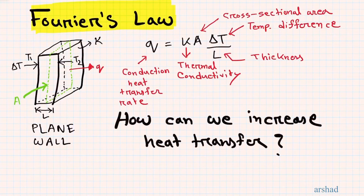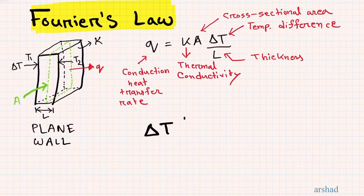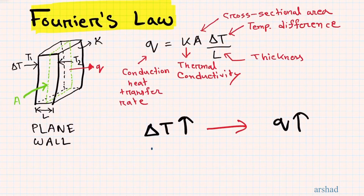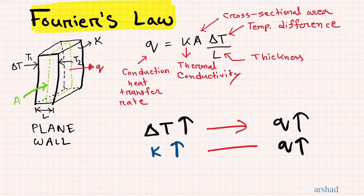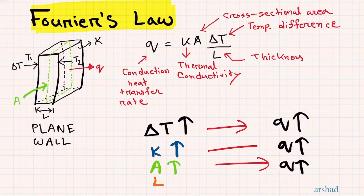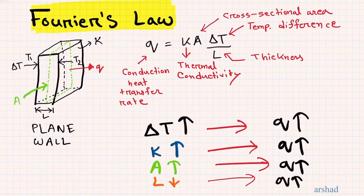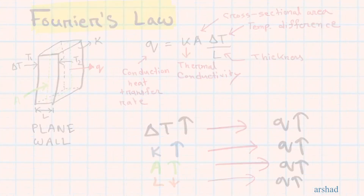Knowing this formula, we can ask: how can we increase heat transfer? Fourier's law tells us that if you increase the temperature difference between the sides of a plane wall, you can increase the transfer rate. If you use a thermally conductive material, your K value (thermal conductivity) is higher and transfer increases. Similarly, a bigger cross-sectional area or a thinner wall also increases the heat transfer rate.